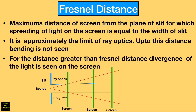It is clear from this diagram the concept of Fresnel distance. If we are away from this Fresnel distance, the wave optics region is present there. So wave optics is applicable for distances greater than Fresnel distance, and ray optics is applicable for distances less than Fresnel distance.